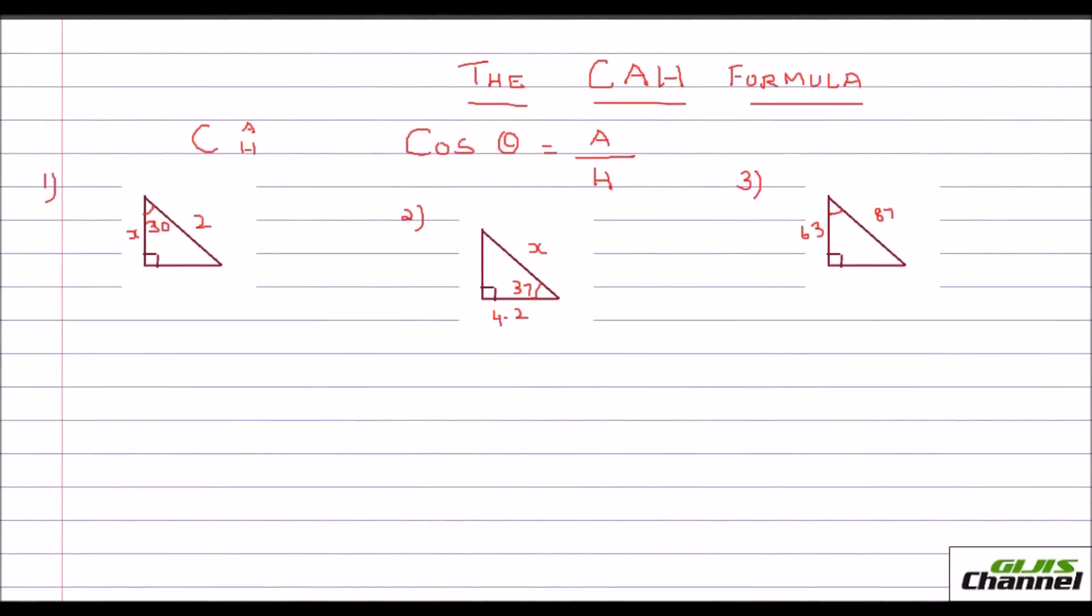In this video we are going to learn about the CAH formula. You write CAH: C stands for cosine theta, A is the adjacent side, and H is your hypotenuse.